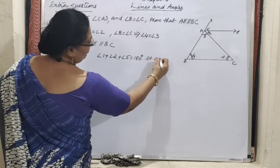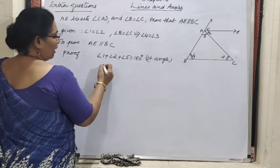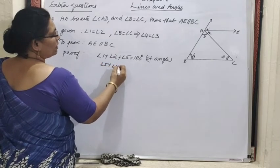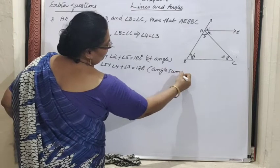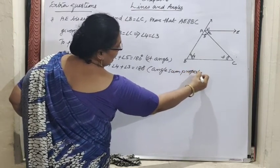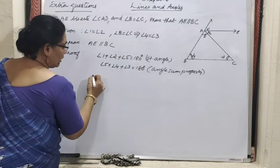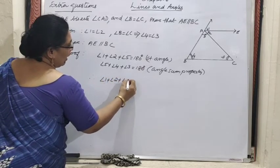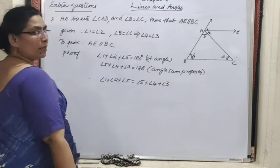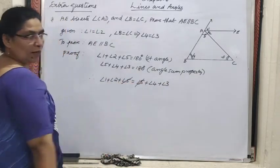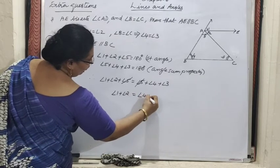Linear pair we cannot write because there are 3 angles — we should write straight angle. Similarly, angle 5 plus angle 4 plus angle 3 equals 180 degrees, by angle sum property of a triangle. Both are equal to 180 degrees, so we can equate them: angle 1 plus angle 2 plus angle 5 equals angle 5 plus angle 4 plus angle 3. Angle 5 cancels, leaving angle 1 plus angle 2 equals angle 4 plus angle 3.